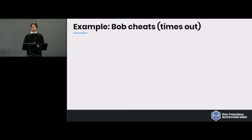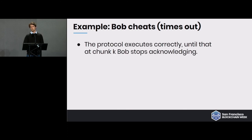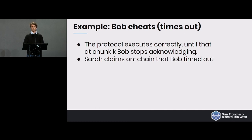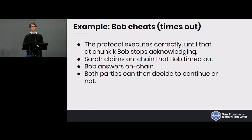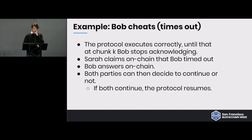Now the case where the buyer tries to cheat by timing out. The protocol executes correctly until chunk k is not acknowledged by Bob, then Sarah claims on-chain that Bob timed out. Bob answers on-chain, and participants are given the possibility of resuming the protocol. We can't simply slash both — we have to allow resumption, which introduces a timeout element to the protocol. If both continue, the protocol resumes; if they stop, they lose the deposits.